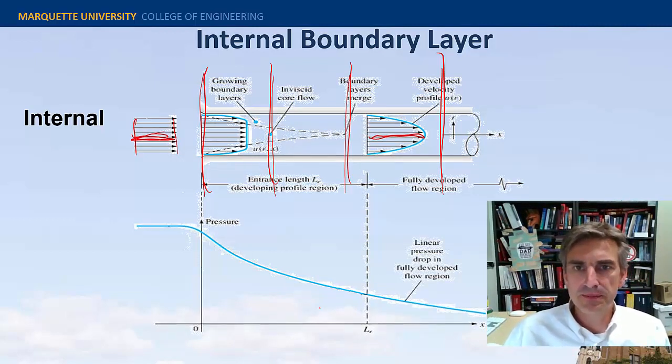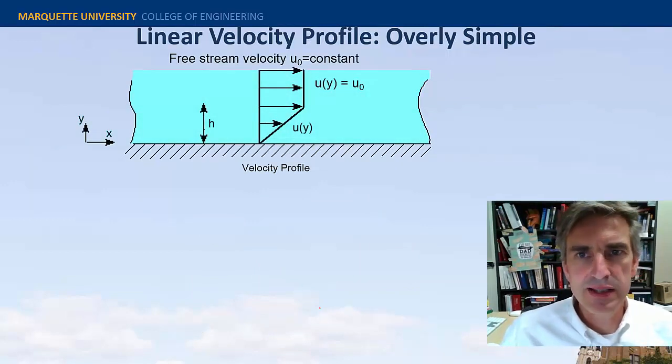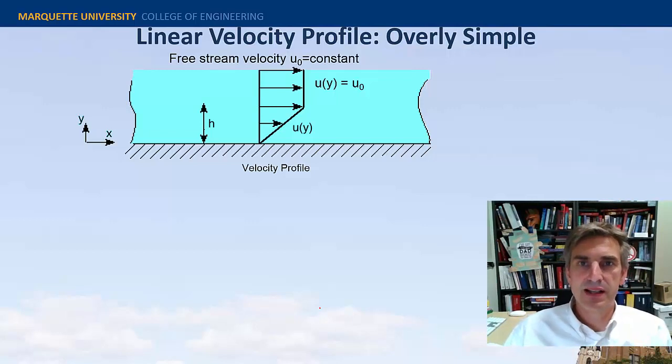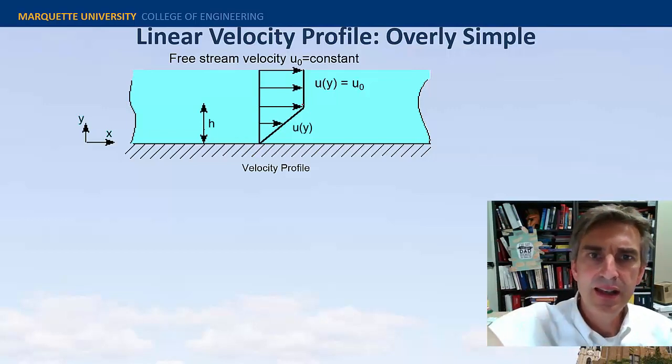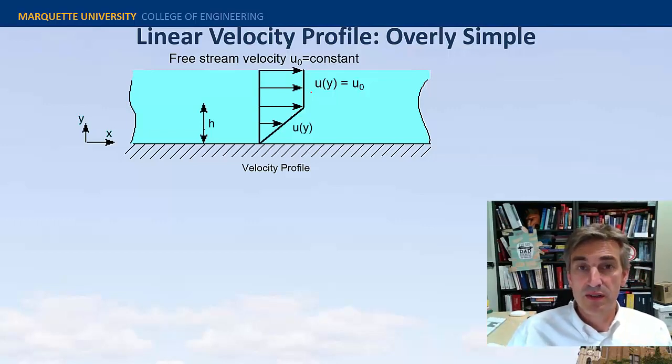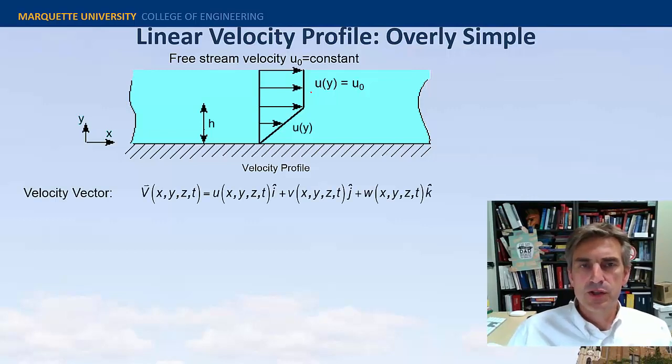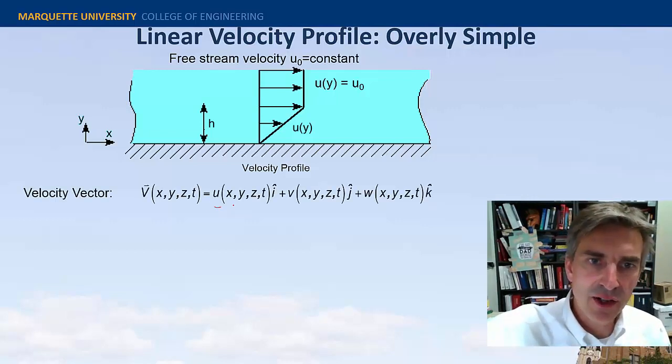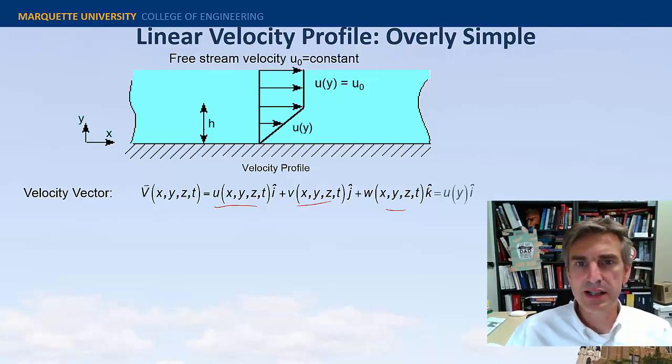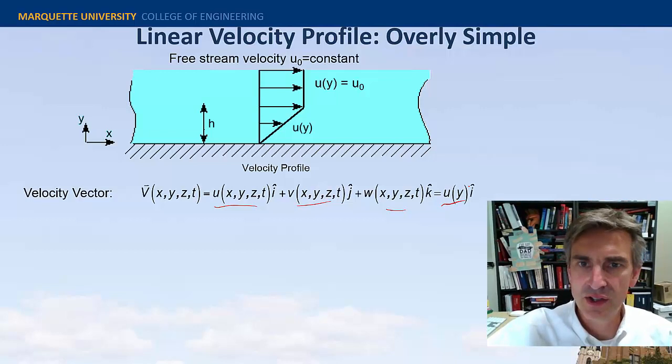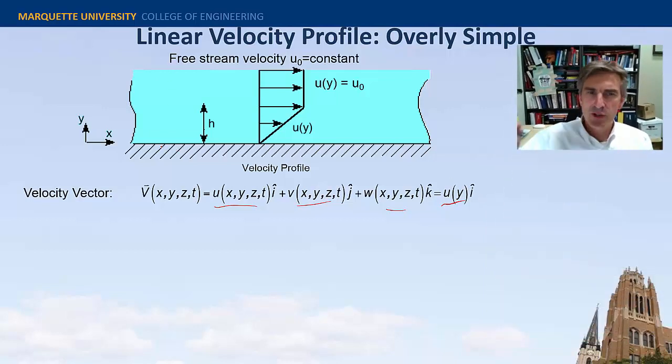All right, let's talk about the linear velocity profile. This is an overly simplified velocity profile. You saw what a real velocity profile looks like on a flat plate in that video, but in this case let's just assume that it's kind of a Couette flow - a linear velocity over a height h, and then above it there's an inviscid region where the velocity is constant. For real velocity vectors, the scalar components u, v, and w have dependency on x, y, z, and t. However, for this linear velocity profile we're assuming that the velocity is only in the x direction, so the u direction, and it's only a function of y. I've drawn it here as a vector so it has a unit vector component and a scalar component.